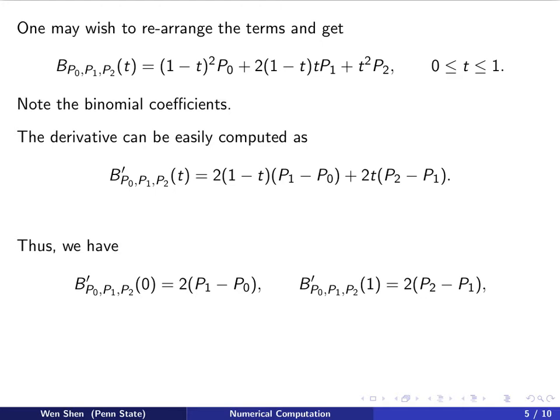For the other end, when t equals 1, the first term is gone and we have only the second term. That is the point where the curve reaches P2. When it reaches P2, the derivative is in the direction coming from P1.